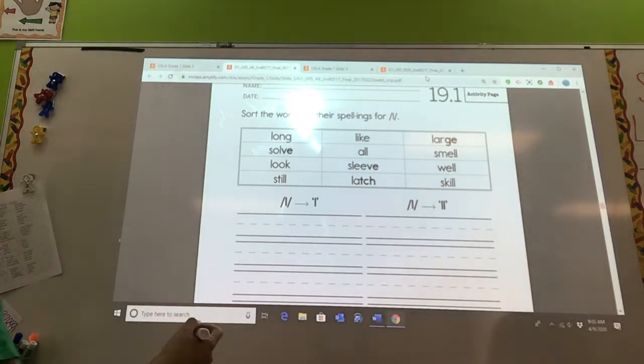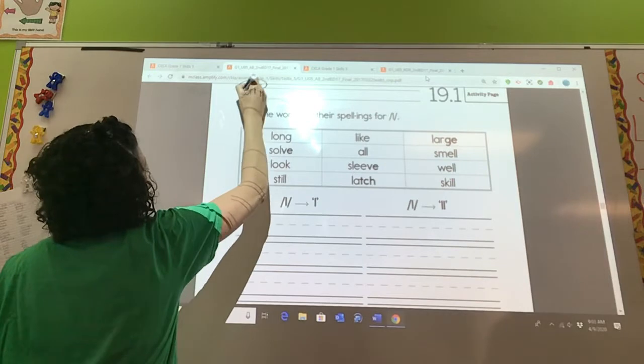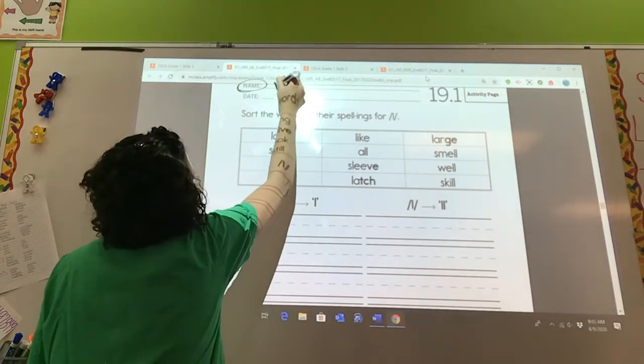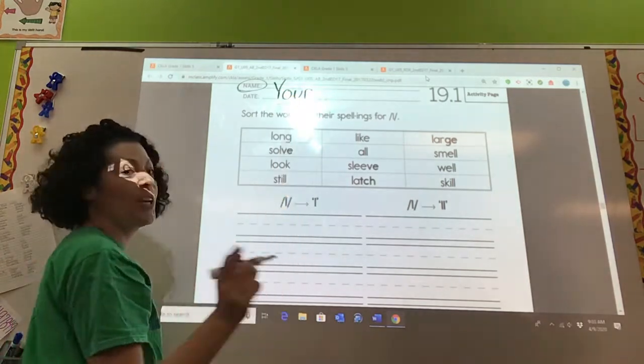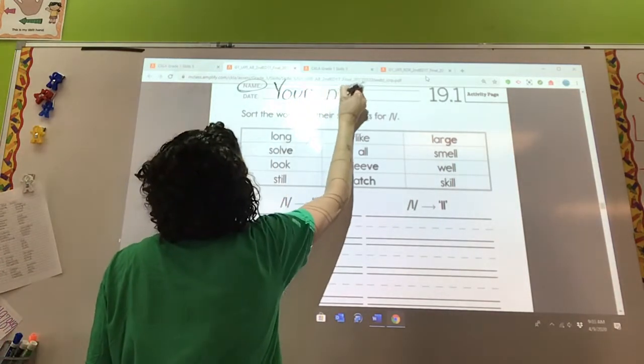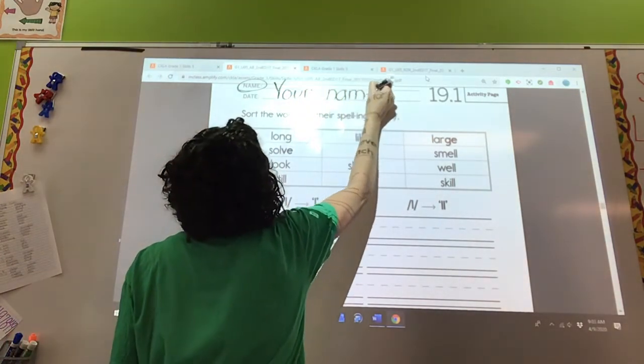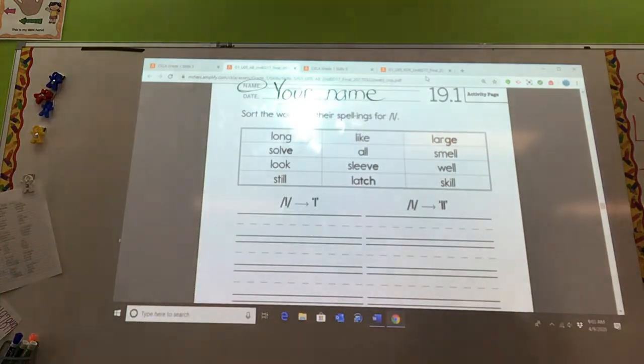All right. Mrs. Singh, do we even need to tell them? I don't think we do. I don't think so, but just in case. You know what I'm going to do? Review a word we like. Your name, not our name. All right. Your name. Your name. What do you think, Mrs. Singh? What do we need to do? Sort the words by their spelling for L.